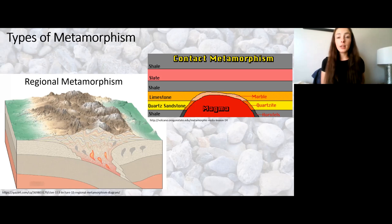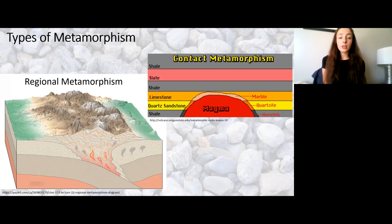Contact metamorphism is smaller scale and it doesn't cause as much foliation, which is just the squiggly lines in a rock caused by really high pressures. Those are caused more often by regional metamorphism due to that converging compression stress.